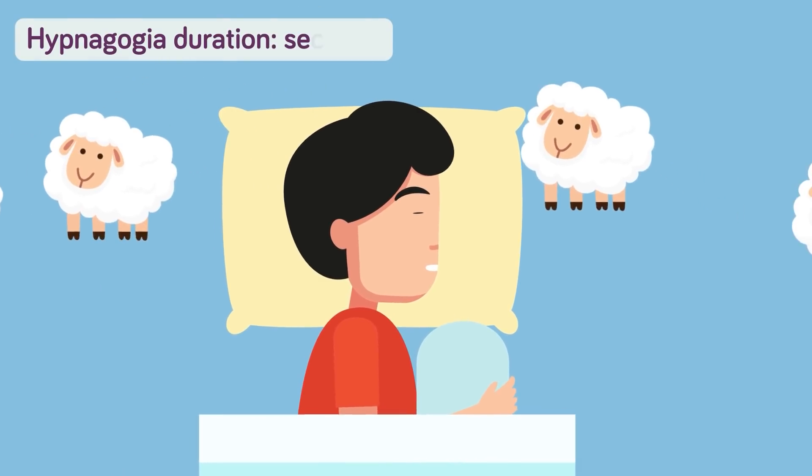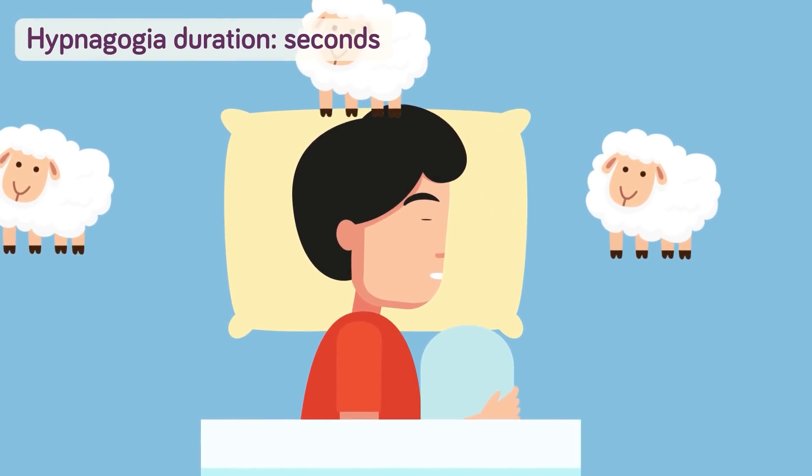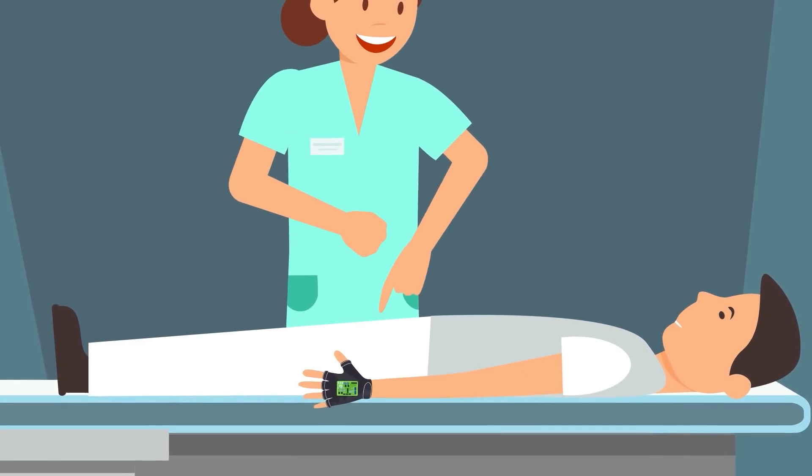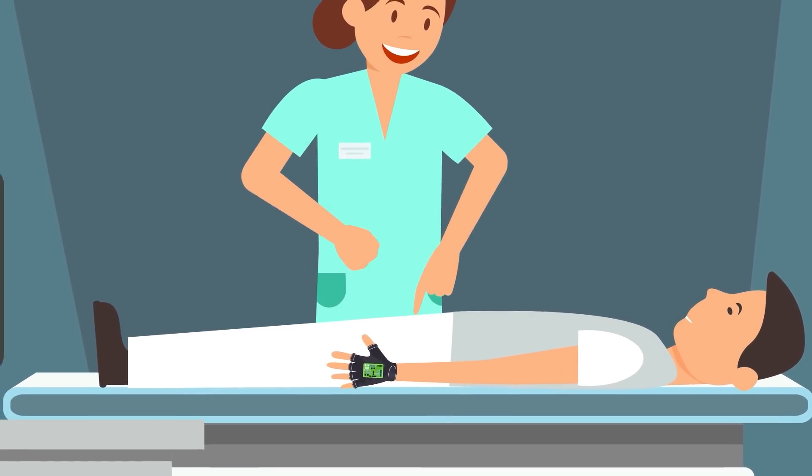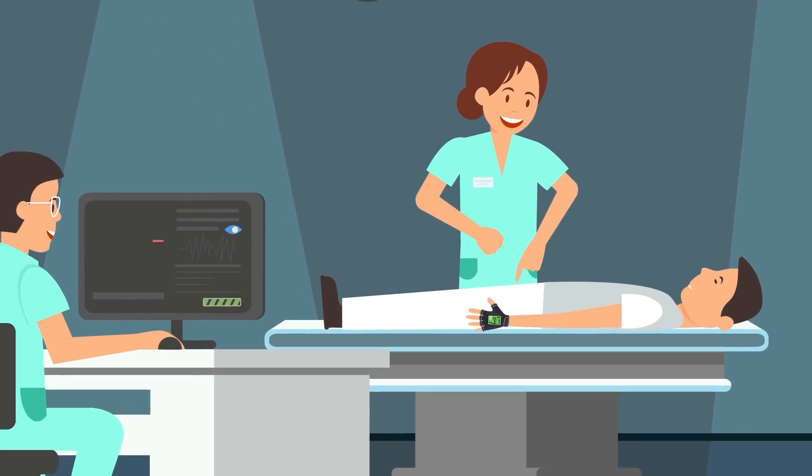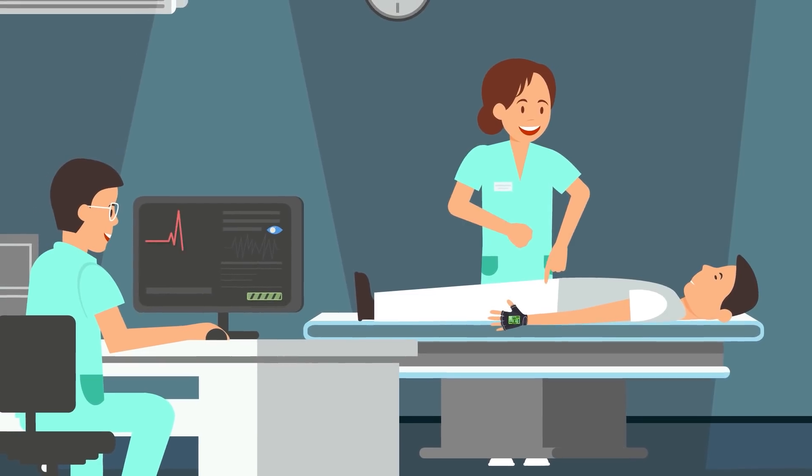The problem is, it can only last seconds and is hard to track, so they built a device to track it. Dormio might look like a glove, but it's much more than that. It's a high-tech sensor that tracks multiple metrics in the body like heart rate, electricity level on the skin, and the position of the fingers to sense when the brain is entering hypnagogia.